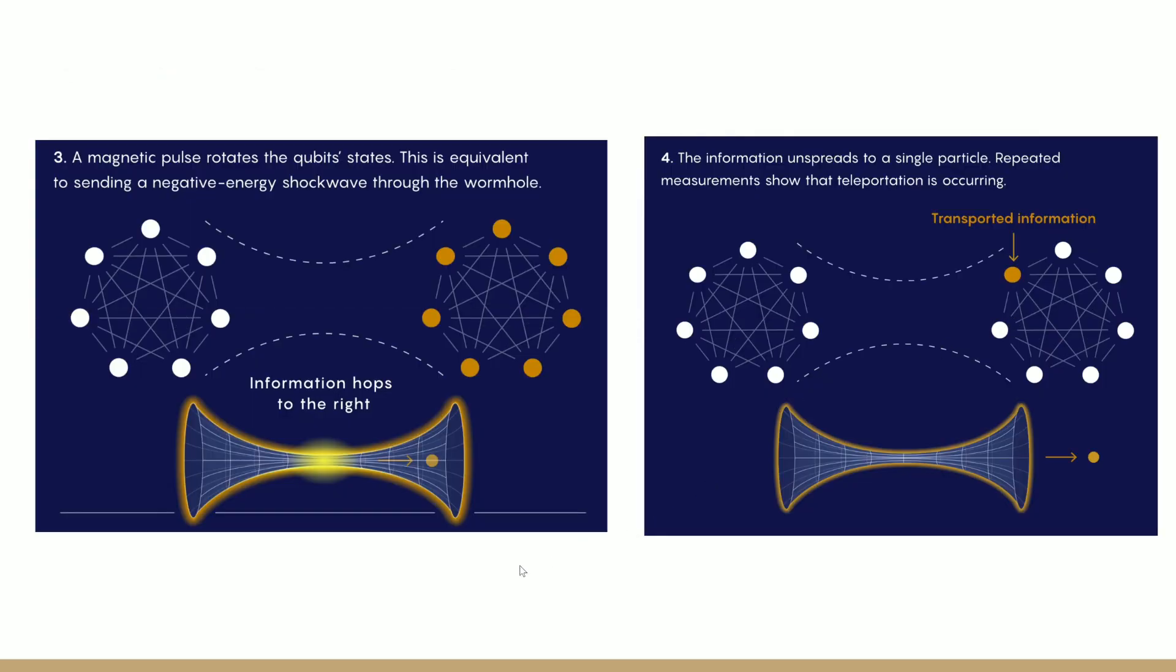Then we get to step three, which is using a magnetic pulse to rotate the qubit state. What this basically means is that they switched the angular momentum of both of the states, like basically switching the spins using a magnet. What they hoped to do is model the transfer of information through a wormhole in a higher dimensional plane. You can't see the actual information moving through, but what's happening is that the magnet is transferring the information in a higher dimensional plane.